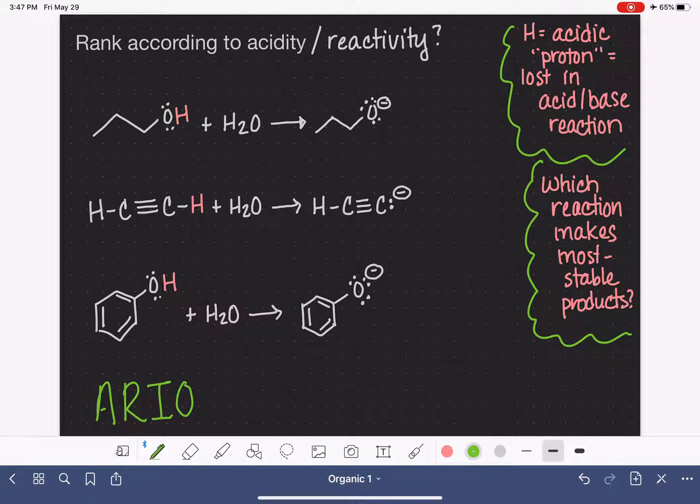So the first thing that we're going to look at is, which atom has the negative formal charge? Oxygen, carbon, and oxygen. And we just talked about how oxygen, because it's more electronegative, is better at holding a negative formal charge. So these two are going to be number one and number two in terms of stability. With the carbon having the negative formal charge, that's the worst case scenario. So this product right here is the least stable product.